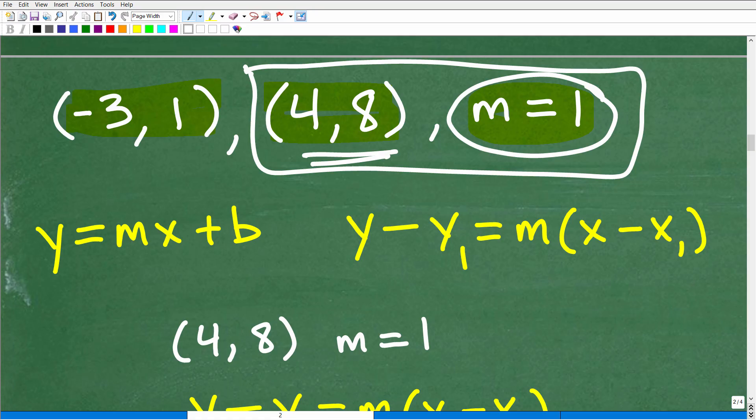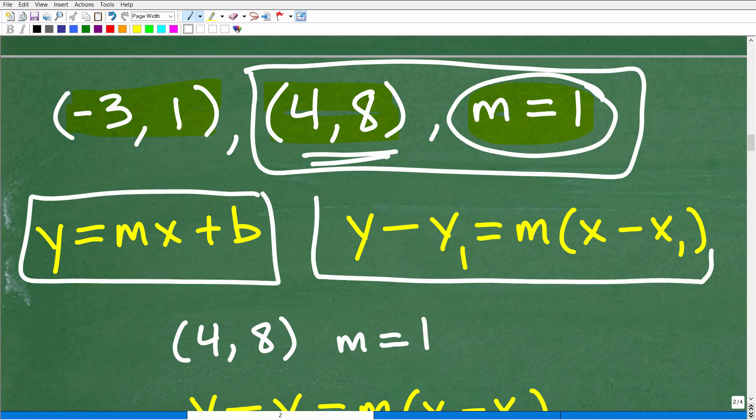So now we're basically kind of changed the question. Let's find the equation of a line that has a slope of 1 that passes through the point, 4, 8. That line will also pass through the point, negative 3, 1. So now if you understand that, again, remember we have two options. We can use the slope-intercept formula or the point-slope formula. We're gonna use the point-slope formula right now.